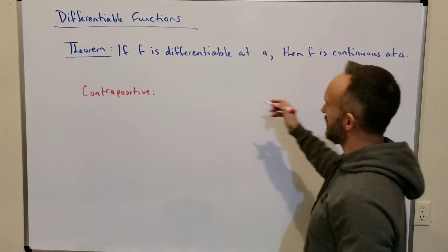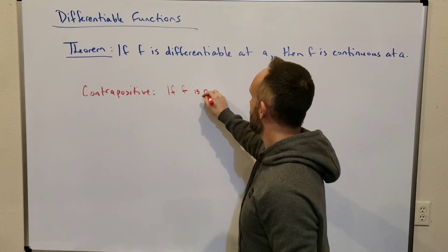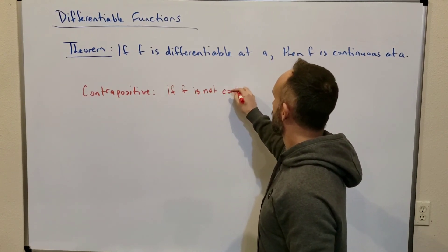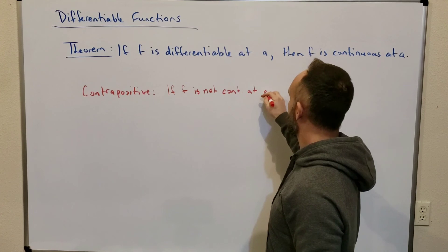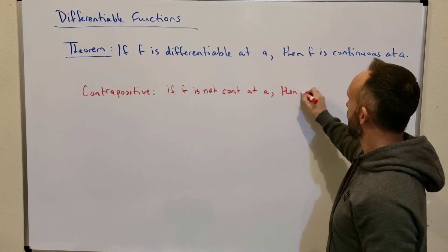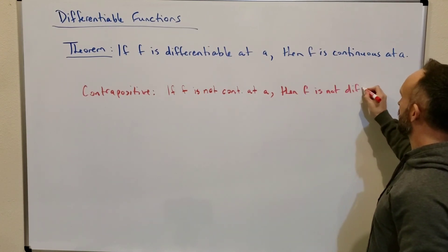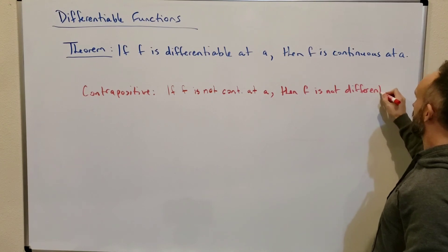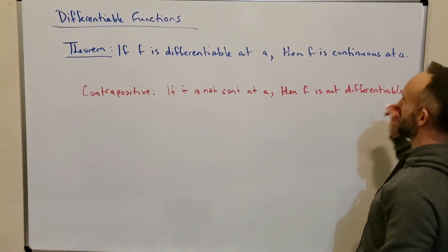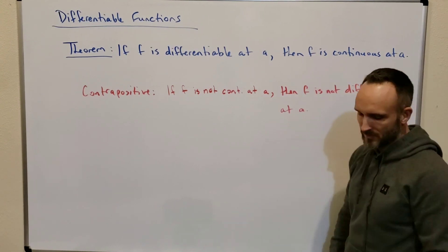If f is not continuous at a, then the opposite of this condition occurs, then f is not differentiable. That's a long word, there we go. Then f is not differentiable at a.